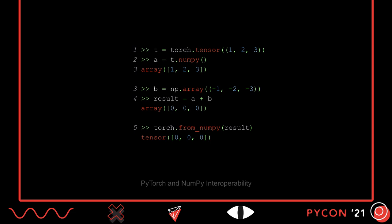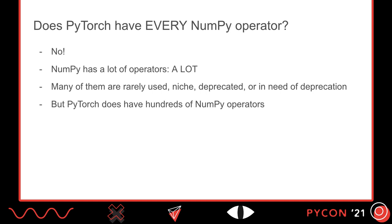Our discussion so far might suggest that PyTorch implements every NumPy operator, but that's not the case. NumPy has more than a thousand operators, but many of them are rarely used, have only niche application, are deprecated, or are in need of deprecation. In fact, NumPy's maintainers are probably the first people to tell you that NumPy has too many operations. So PyTorch doesn't implement them all, and I don't know of any framework other than NumPy which does. But PyTorch does have hundreds of NumPy operators, and we've focused on implementing those our community cares about.